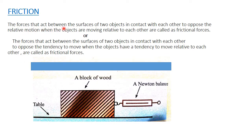What is friction? The forces that act between the two surfaces which are in contact with each other to oppose the relative motion when the objects are moving relative to each other. In other words, these are the forces that act to oppose the tendency to move — objects have a tendency to move relative to each other. When we pull this block of wood using a Newton balance, it has a tendency to move in one direction, but the table tries to oppose that motion in the opposite direction. That is frictional force.